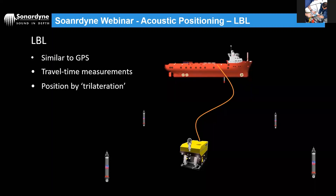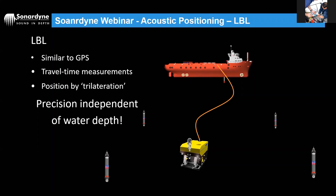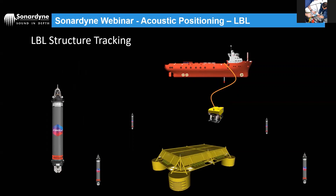Position is worked out using trilateration — not triangulation, though the terms are often used interchangeably. A key advantage of LBL: precision is independent of water depth. If you take an array at 100 meters depth and place it at 1,000 meters with the same geometry, you get exactly the same performance, because everything is measured relative to the seabed beacons. This is why LBL is used in deep water.